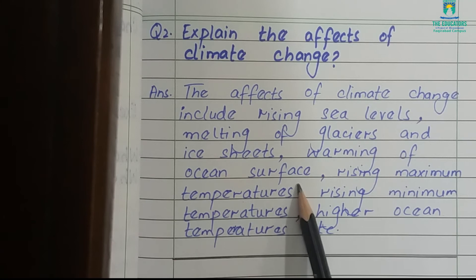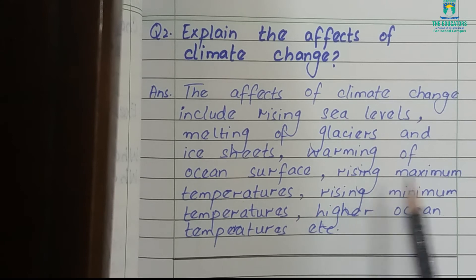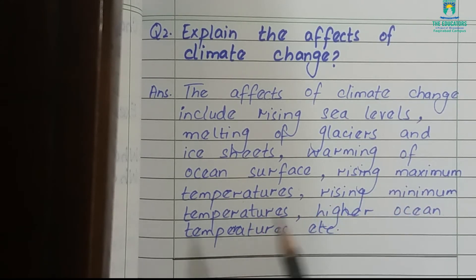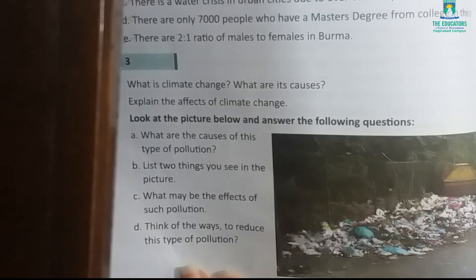Further effects include warming of the ocean surface — if the temperature is very hot, it can cause warming on the upper surface of the ocean — as well as rising maximum temperatures, rising minimum temperatures, and higher ocean temperatures. Now open your geography textbook. This is your homework task.